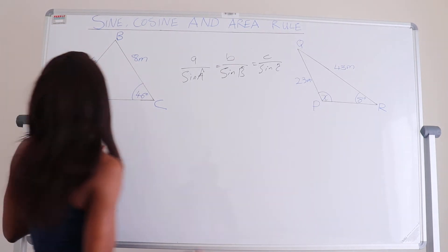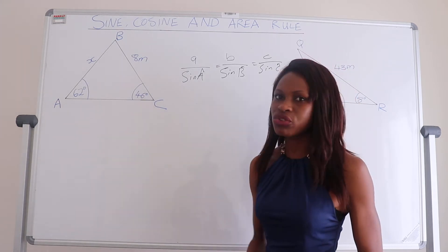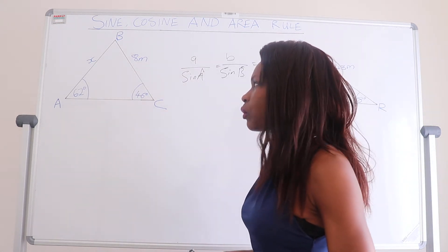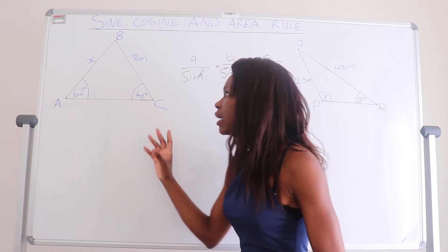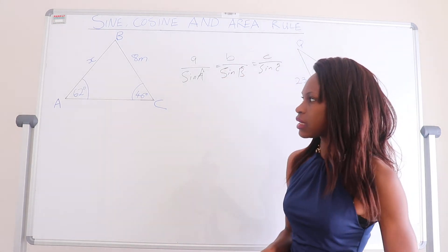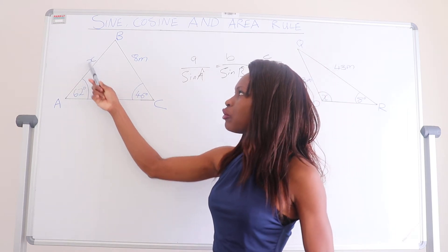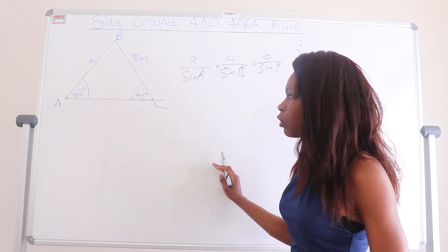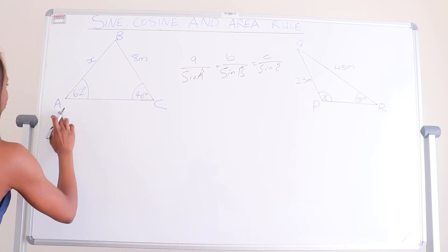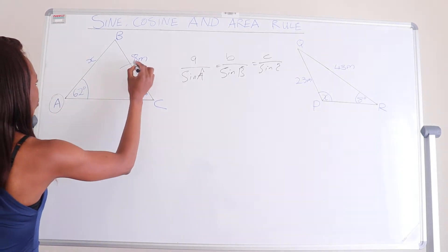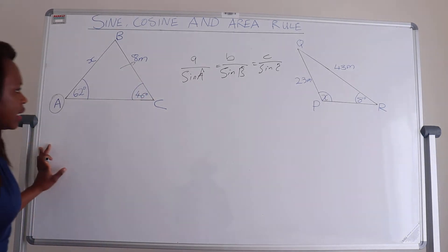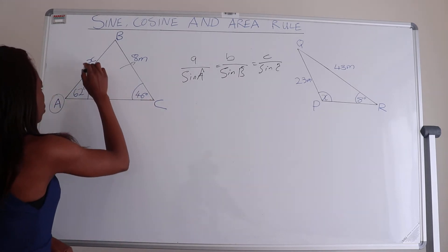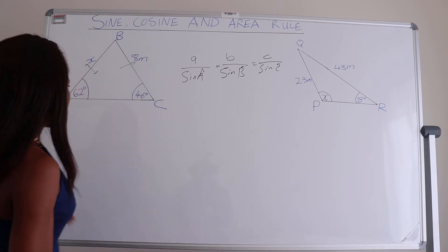Let's go straight to the question where we are asked to find the value of x in triangle ABC. Angle A equals 62 degrees, angle B is unknown, and angle C equals 46 degrees. Side AB is x and side BC equals 8 meters. We are asked to find the unknown length x between A and B. The sine of A must be divided by its opposite side, which is 8 meters, and the sine of C divided by its opposite side, which is x.